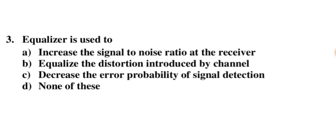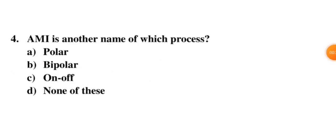Next question: An equalizer is used to — increase the signal-to-noise ratio at the receiver? No. Equalize the distortion introduced by the channel? Yes, this is correct. Decrease the error probability of signal detection? No, because our signal's amplitude depends on energy. So B is the correct answer for this question.